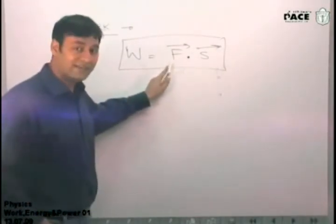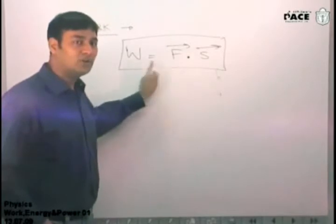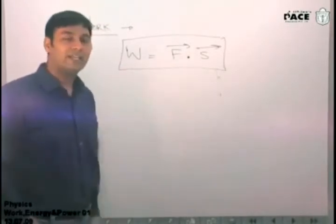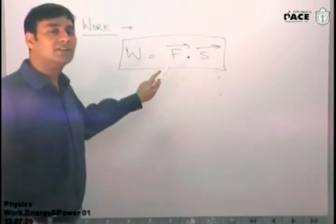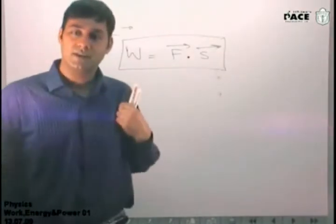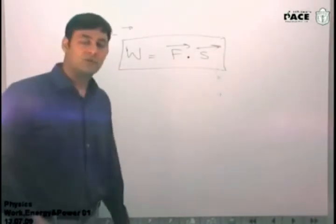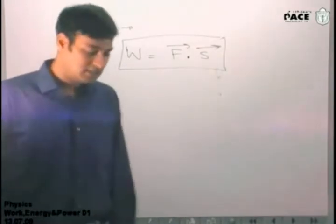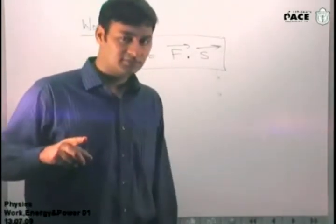Work done by a force, F, is equal to F dot S. Now, can anyone tell me what is F here? Force by which we are finding the work done. What is S? The displacement of the object on which the force has been applied.